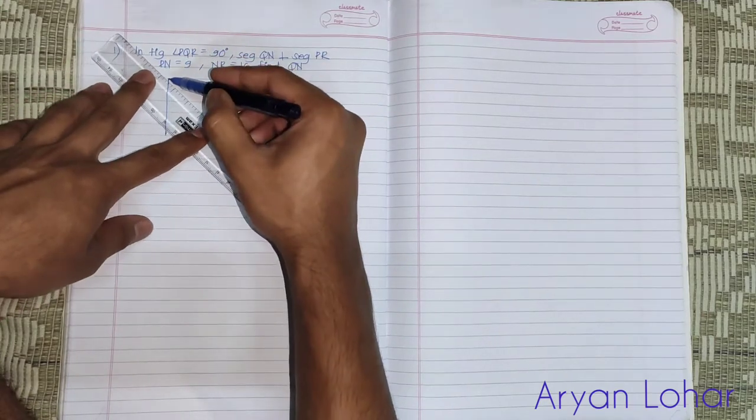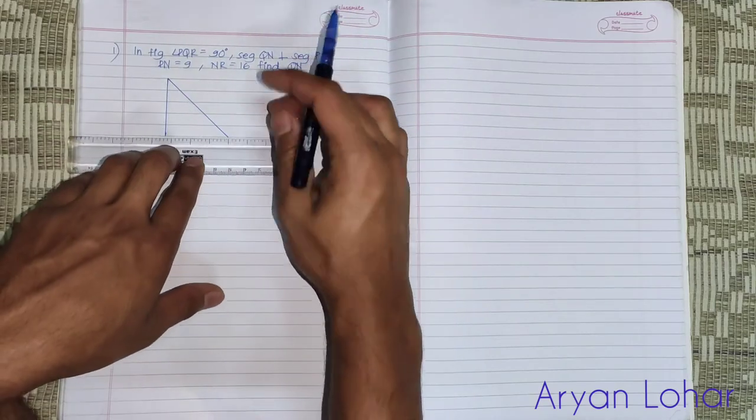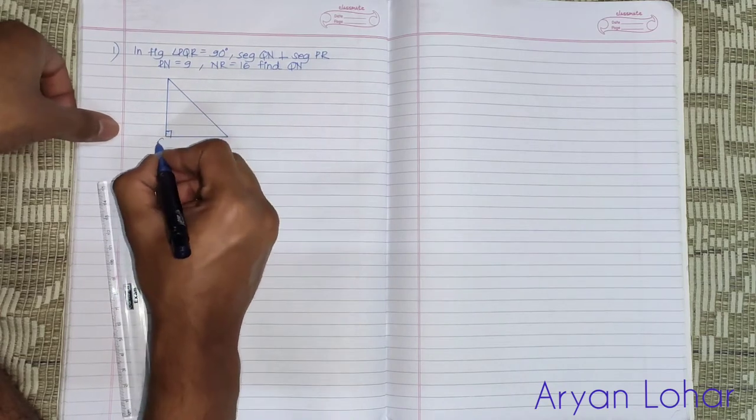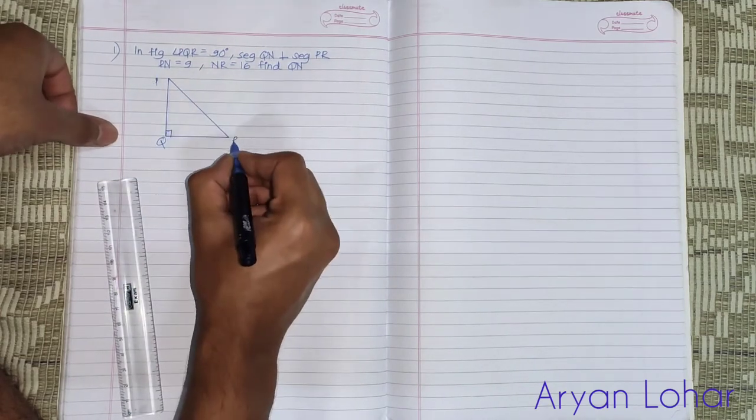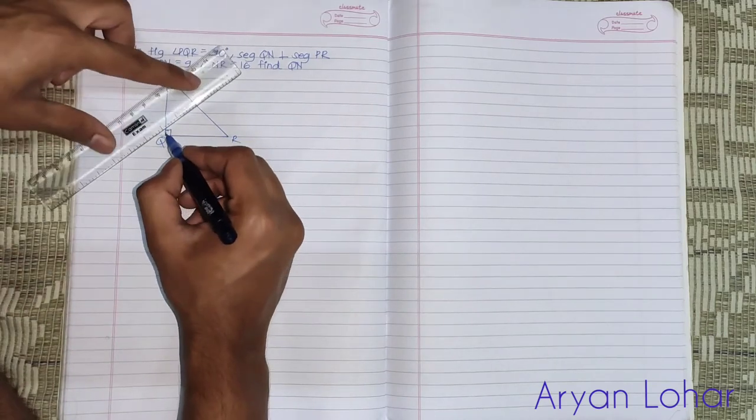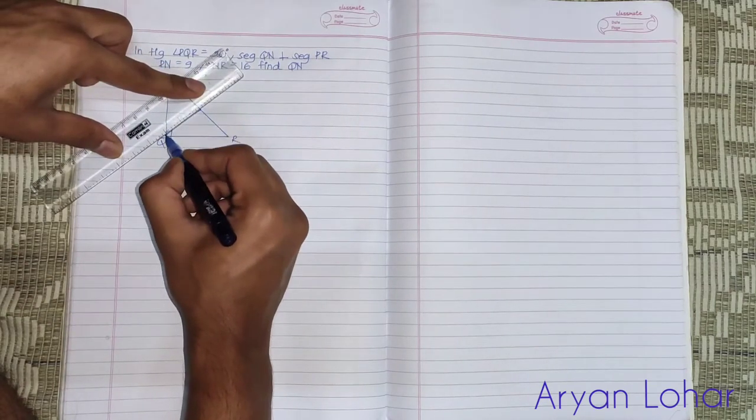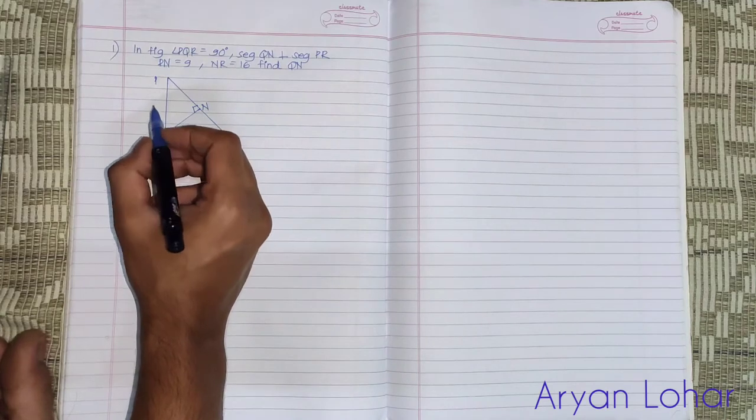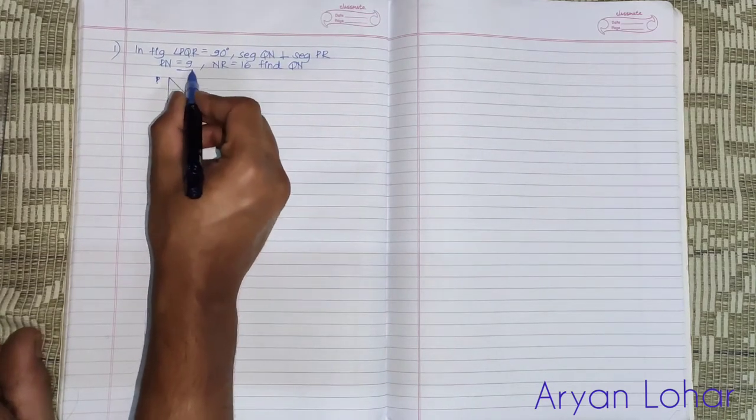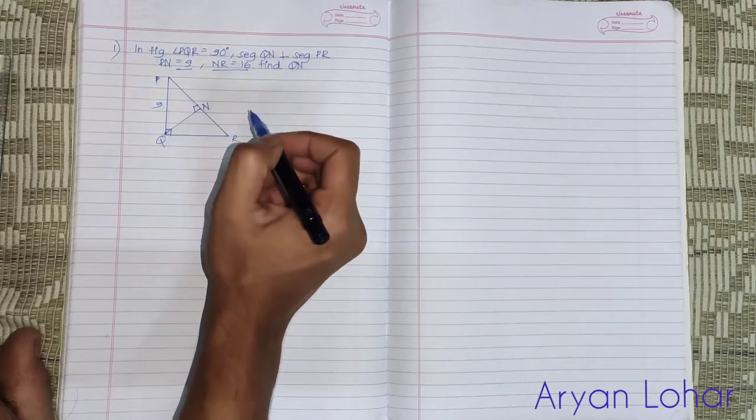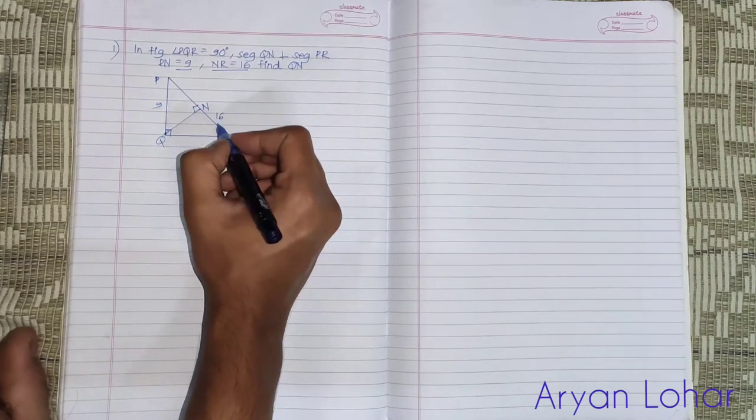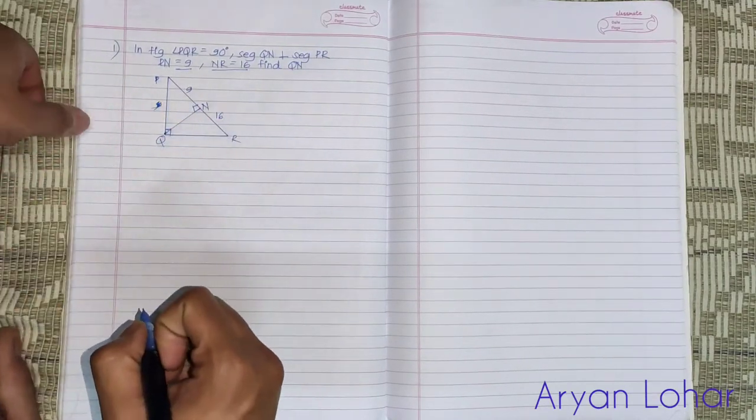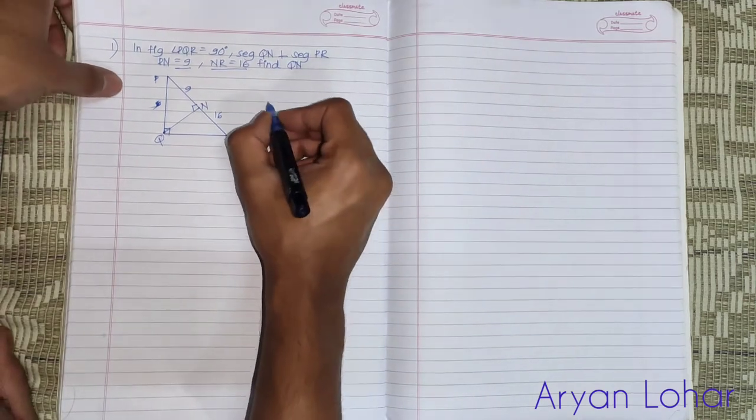Angle Q is 90 degrees, so the triangle becomes a right angle triangle. Q is 90 degrees and QN is perpendicular to PR. So first of all, write the given measurements: PN is equals to 9, NR is equals to 16. Now we have to write the solution.